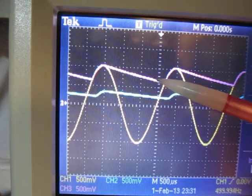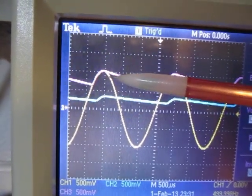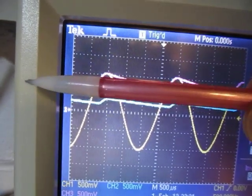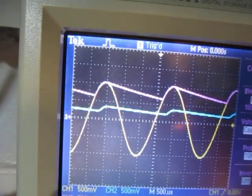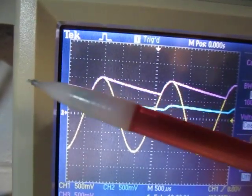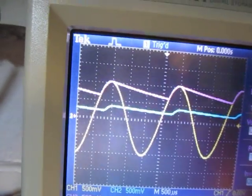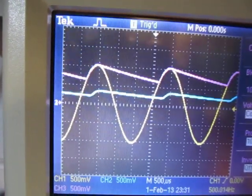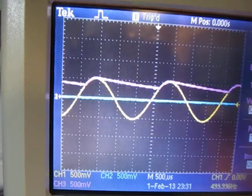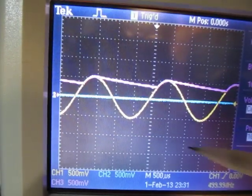And again, if we made that bleeder resistor larger, that drop off would be much, much shallower and eventually get to the point where it just kind of rides along those peaks. Again, I made it kind of a fast discharge here so you can kind of see the effect.